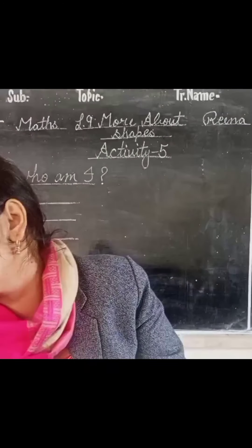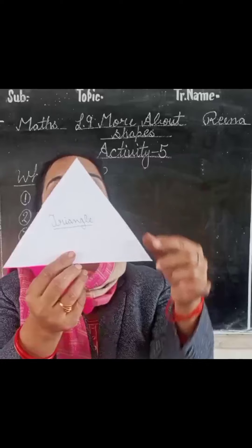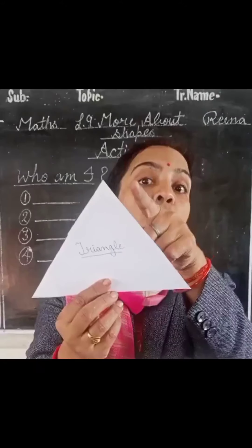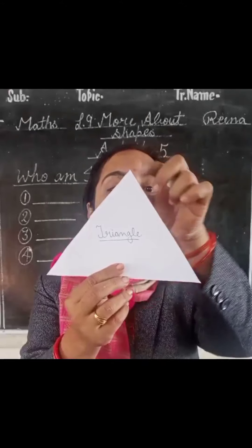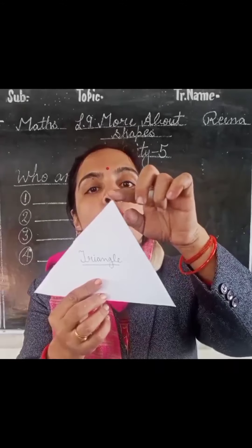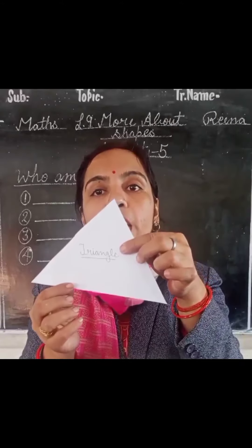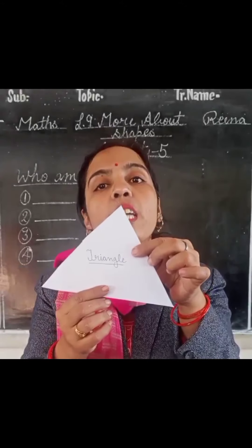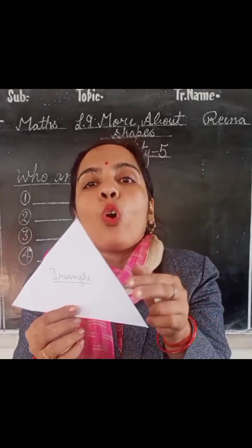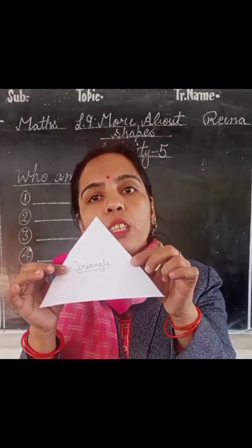Now the third type of shape is a triangle. This is a triangle. How many sides in a triangle? 3 sides: 1, 2 and 3. And how many corners in a triangle? 3 corners: 1, 2 and 3. So in a triangle there are 3 sides and 3 corners. The sides of a triangle may or may not be equal.